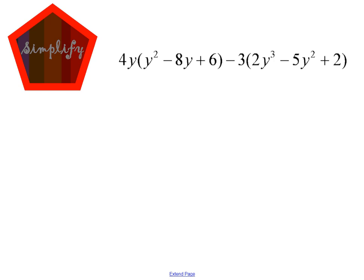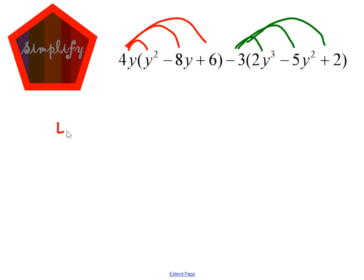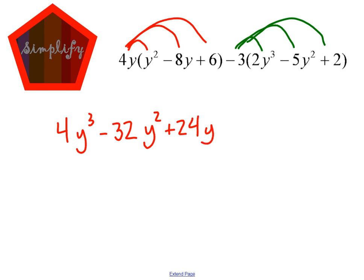So distribute each thing. 4y times y squared — I have 4, and y times y squared is y to the third. 4 times negative 8 is negative 32. y times y is y squared. 4 times 6 is 24y. I have negative 3 times 2, that's going to be negative 6y cubed. Negative 3 times negative 5 is positive 15y squared, and negative 3 times 2 is negative 6.